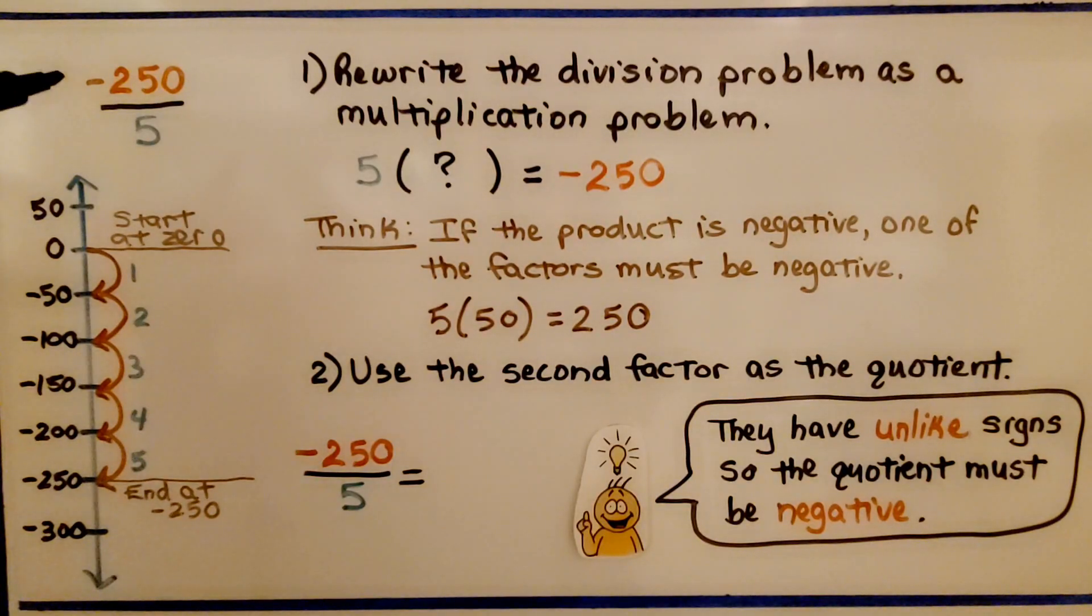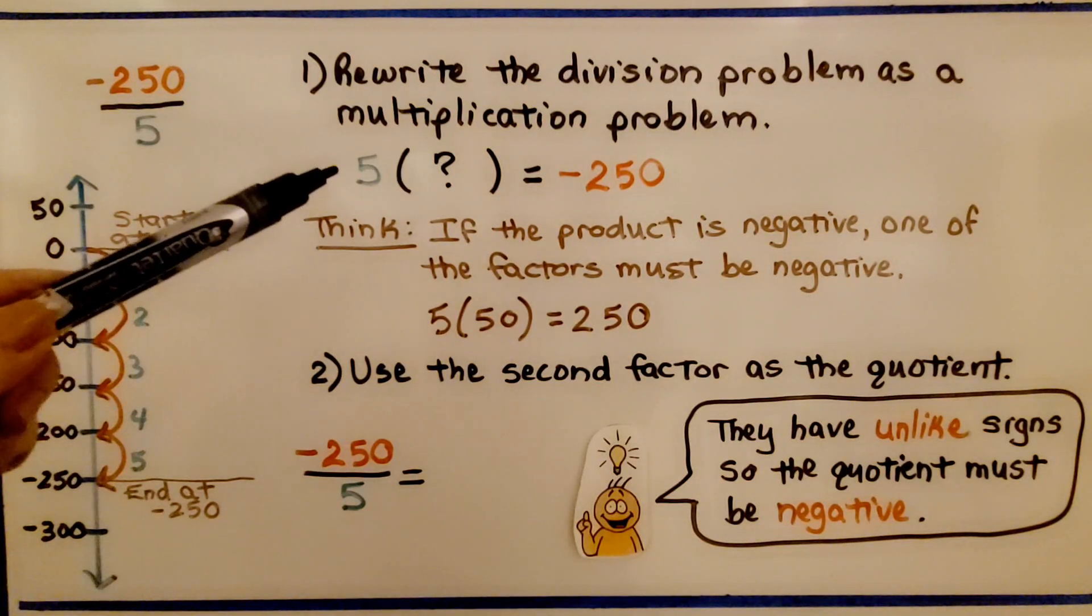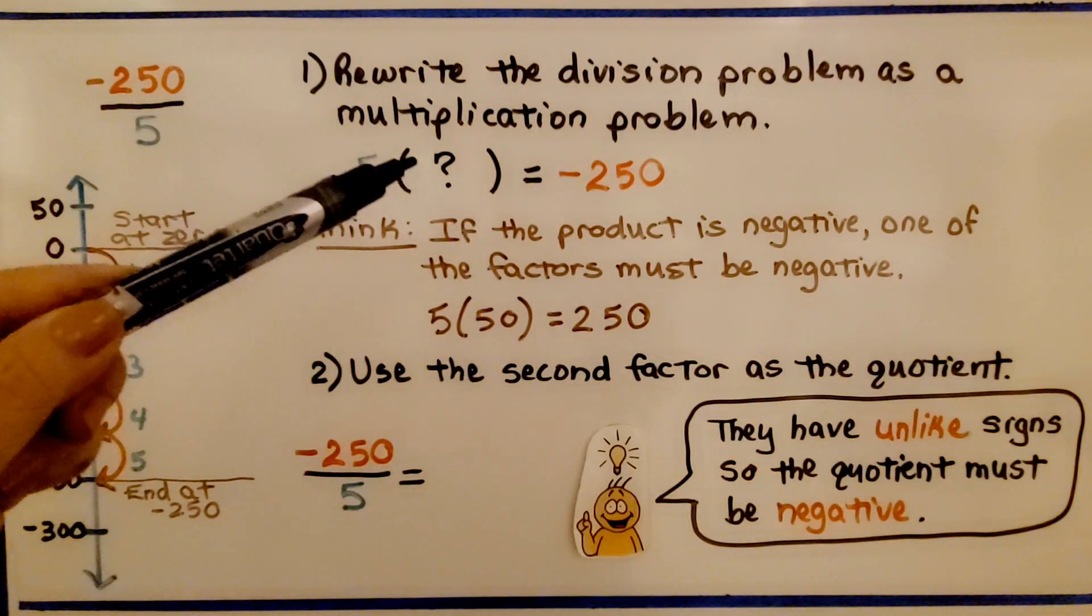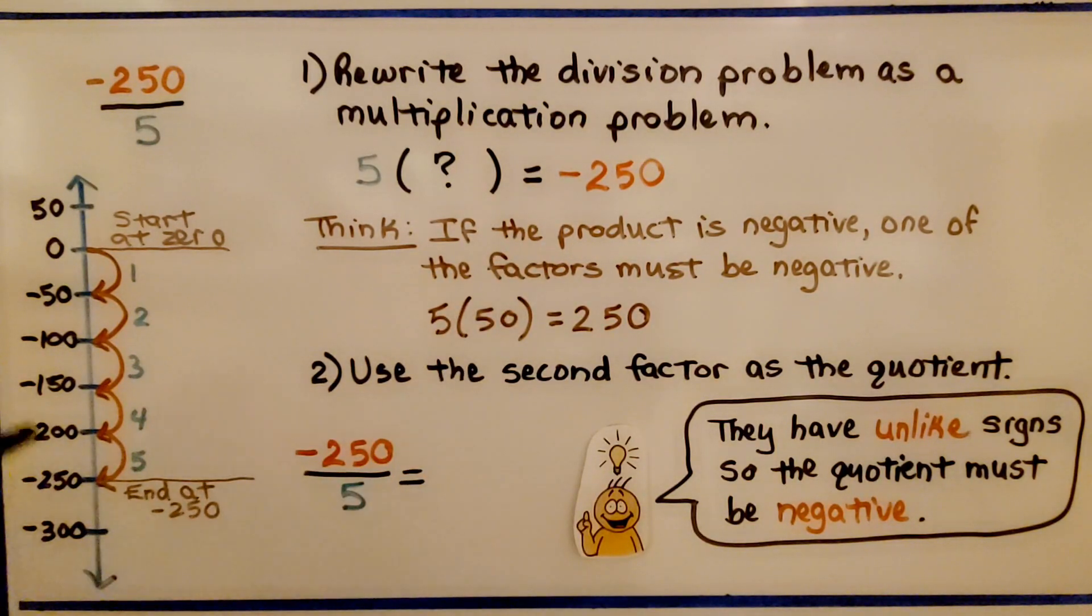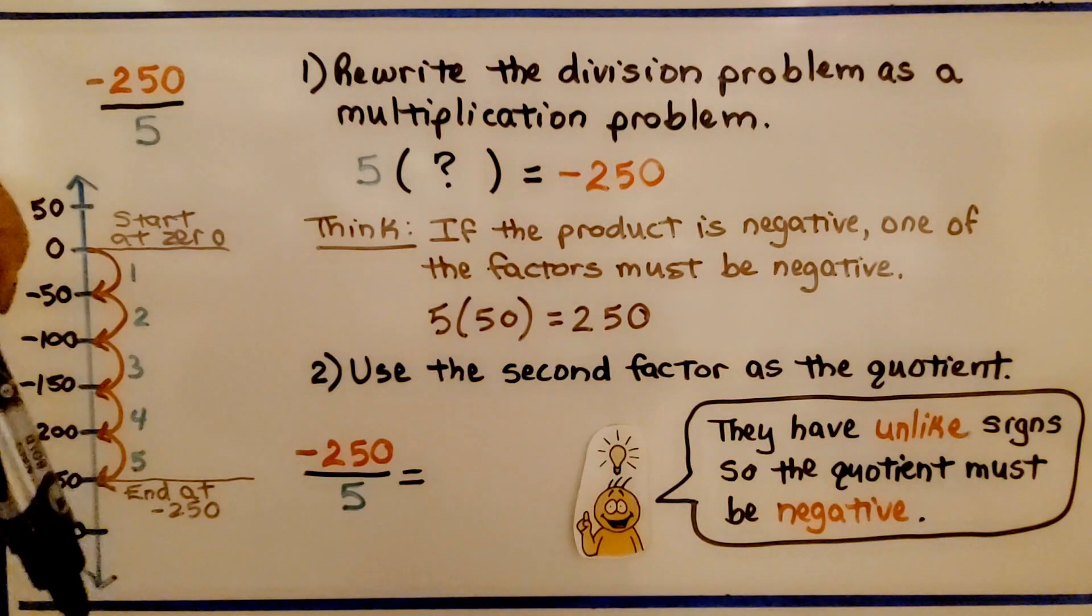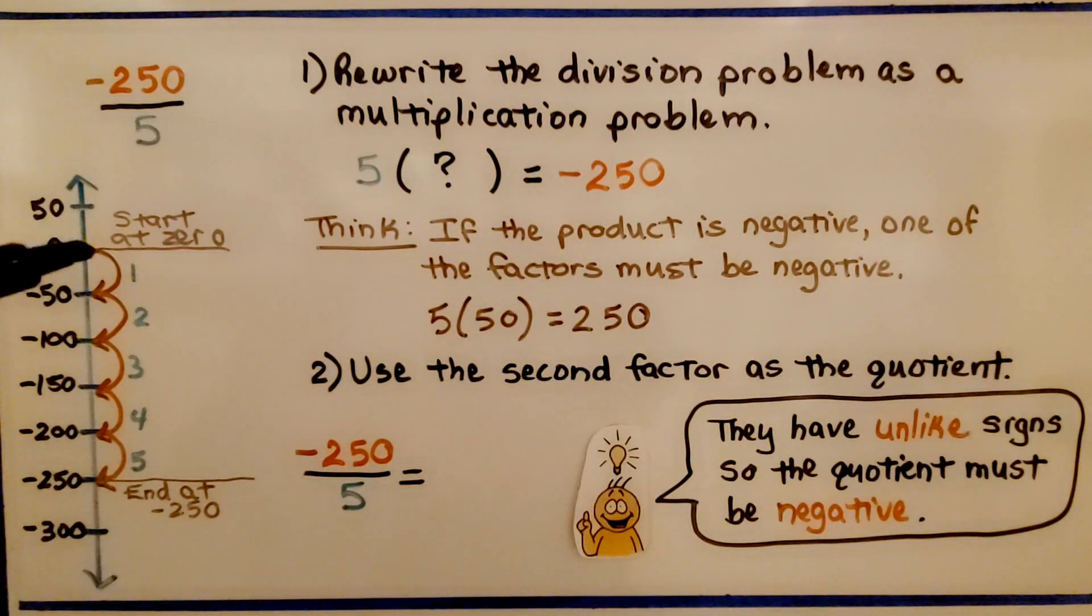Here we have a division problem. We have a negative 250 divided by 5. We rewrite the division problem as a multiplication problem. 5 times some number is equal to a negative 250. On a vertical number line, we start at zero. We're going to end at negative 250. We're going down into the negatives. We need to split this into 5 equal parts. Each part will be 50.